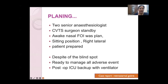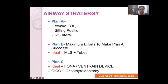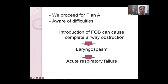Plan A was awake fiber optic intubation in the sitting and right lateral position. Plan B involved maximum efforts to achieve plan A; ideally micro-laryngeal tubes and micro-laryngoscopy were considered since their smaller lumen could pass beyond the narrow tracheal segment, though these were not available in this setup. Plan C ideally was front-of-neck access or a Ventrain jet ventilation device. Since the surgeon indicated tracheostomy was not feasible, in a can't-intubate, can't-oxygenate scenario, cricothyrotomy was the only option to oxygenate the patient.